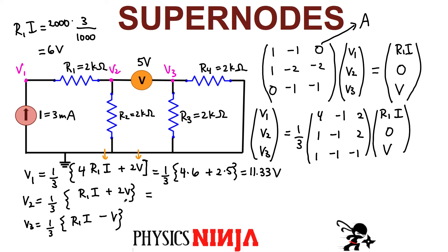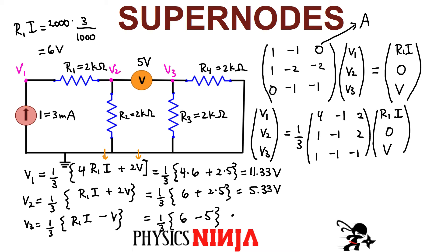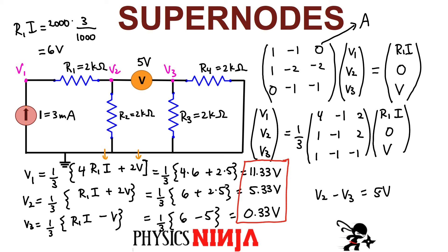V2 = (1/3)(6 + 2×5) = (1/3)(16) ≈ 5.33 volts. And V3 = (1/3)(6 − 5) = 1/3 ≈ 0.33 volts. We can verify: V2 − V3 = 5.33 − 0.33 = 5 volts, which is exactly what's required by the power supply. That confirms our solution is correct.